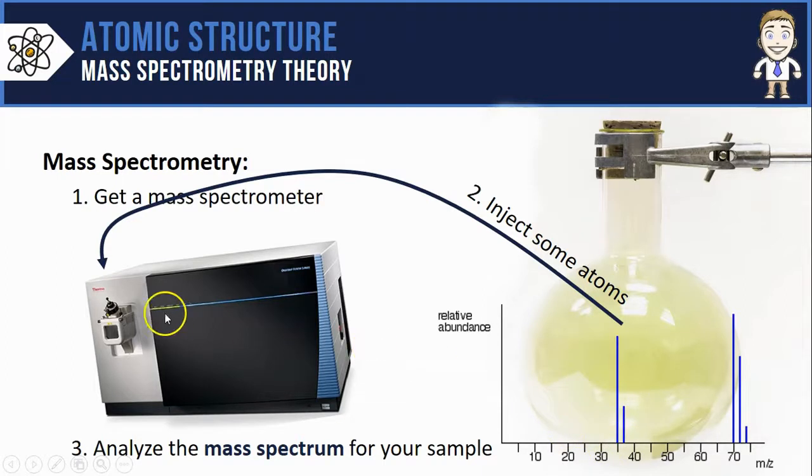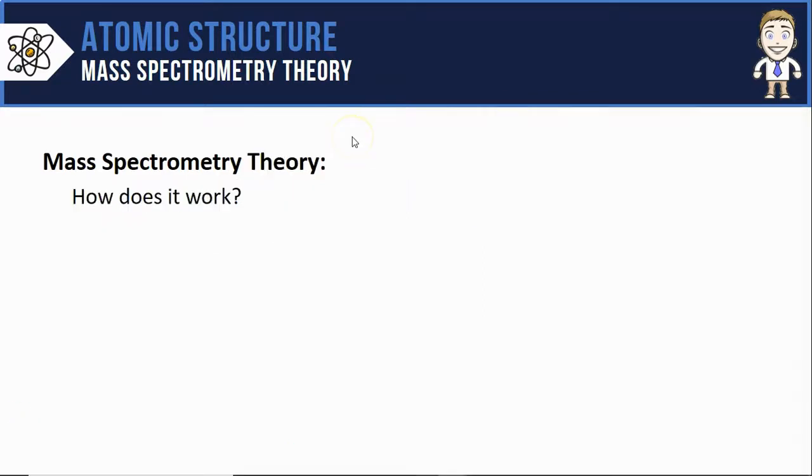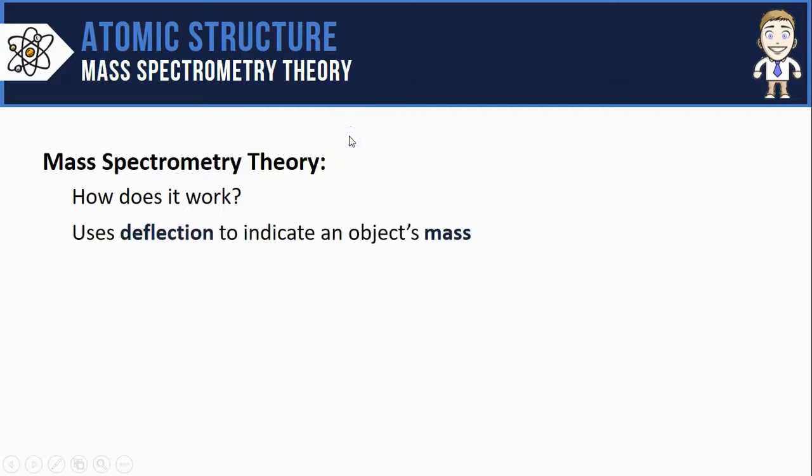The graph is called a mass spectrum, which you analyze to learn about your sample. So while those mass spectrometers are very complex instruments, they work on a pretty simple principle. And it's the idea that deflection can be used to indicate an object's mass.